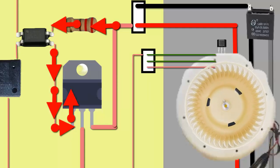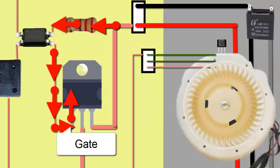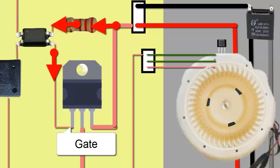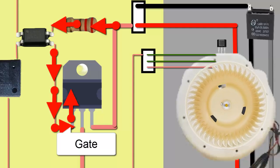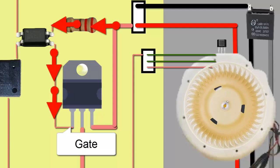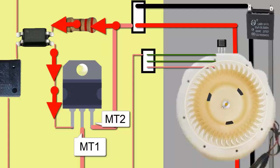The triac, through one of its pins called the gate, receives the signal from the optocoupler. The gate activates the triac through a voltage signal, allowing communication between pins MT1 and MT2, acting as a gate-controlled switch.